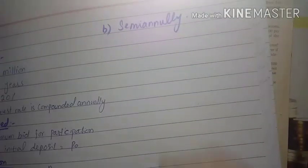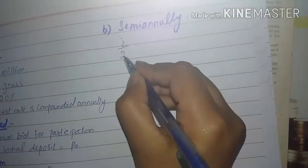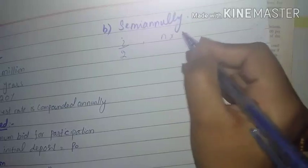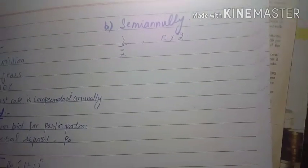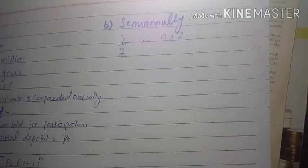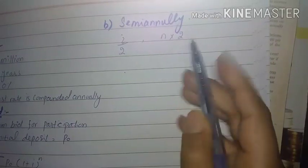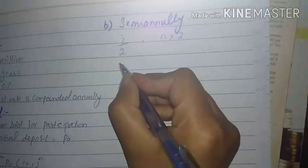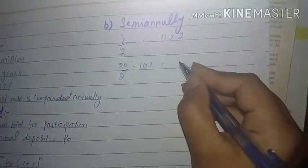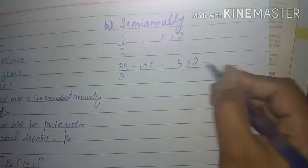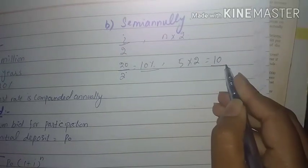Now we move to part B. We set the interest rate to semi-annual compounding. In a year there are 2 semi-annuals — semi-annual means 6 months. So we divide i by 2 and multiply n by 2. We have i = 20, so 20 divided by 2 = 10%, and n = 5 multiplied by 2 = 10.